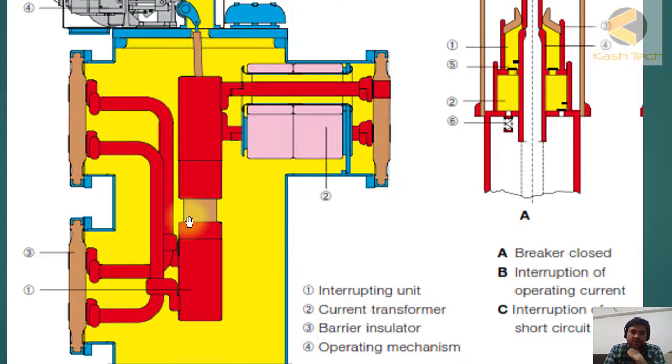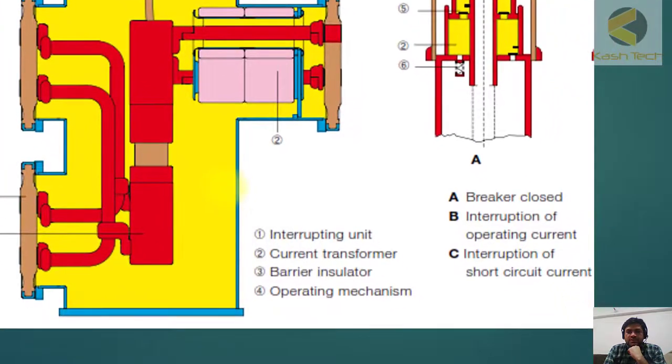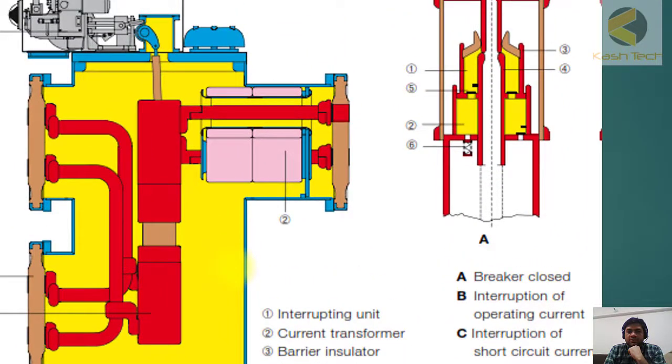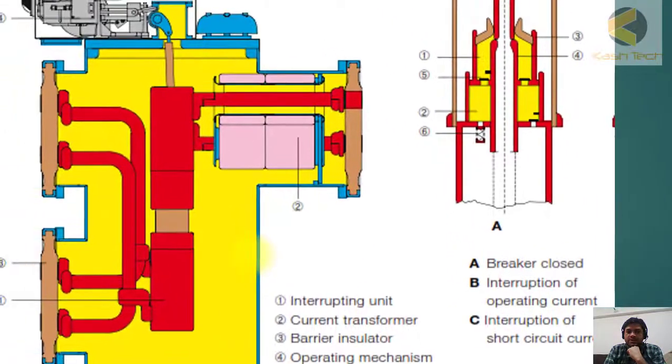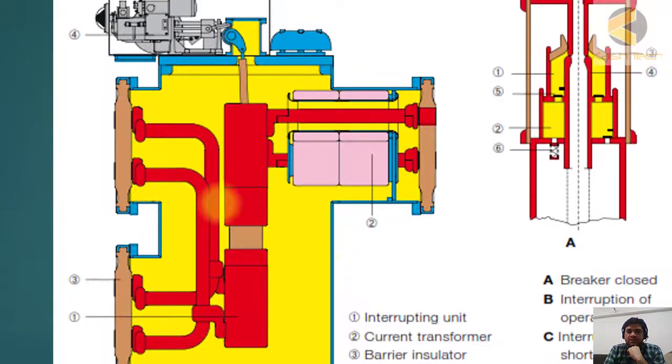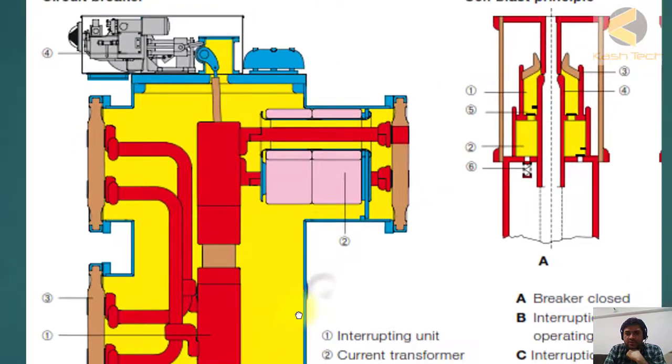It can break the load current as well as the short circuit current. But the isolator is an off-load device that can only be operated at no load. If someone tries to open it, first of all there are interlocks. But if an interlock fails and somebody opens the isolator on load while the breaker is also closed, a huge spark will happen because the isolator cannot quench the current.